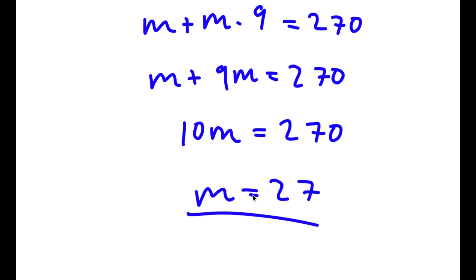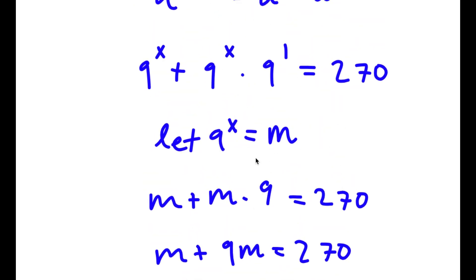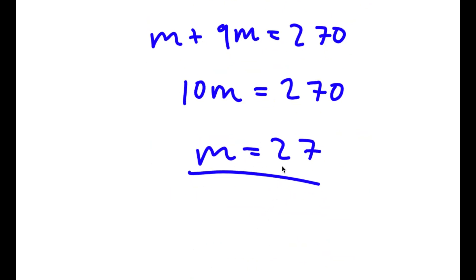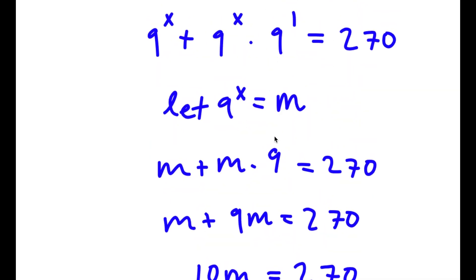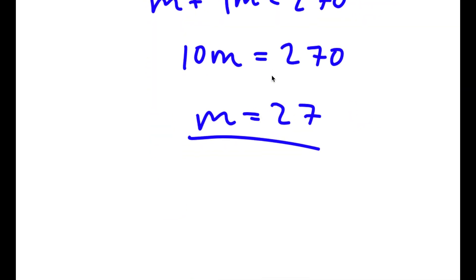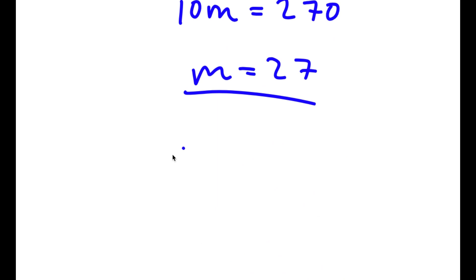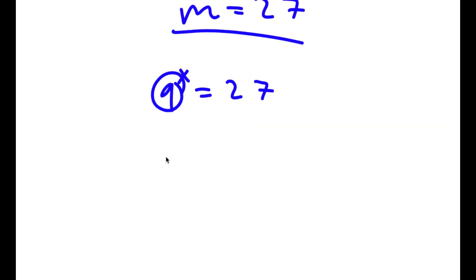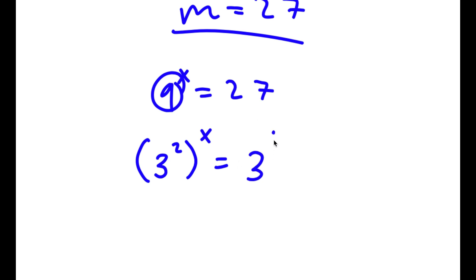We got the value of m, but we're actually looking for the value of x. So if 9 to the power of x equals 27, because m is 9 to the power of x, then I get 9 to the power of x is equal to 27. To solve this, I'm going to rewrite 9 as 3 squared, and rewrite 27 as 3 to the power of 3.